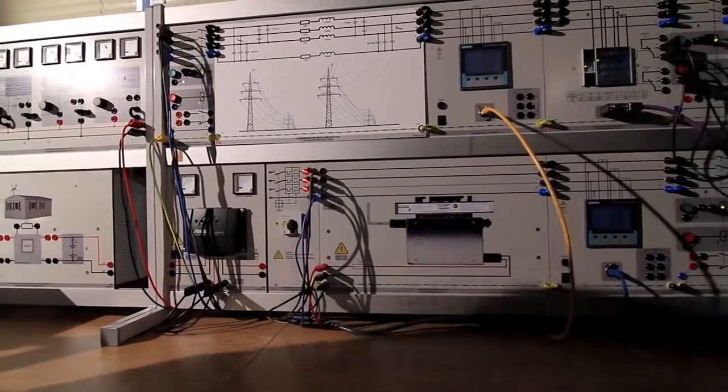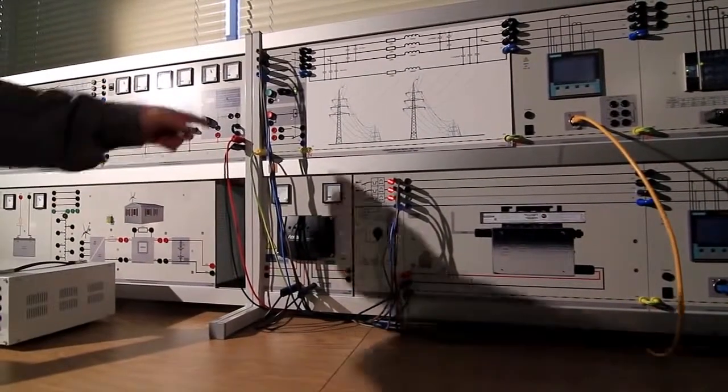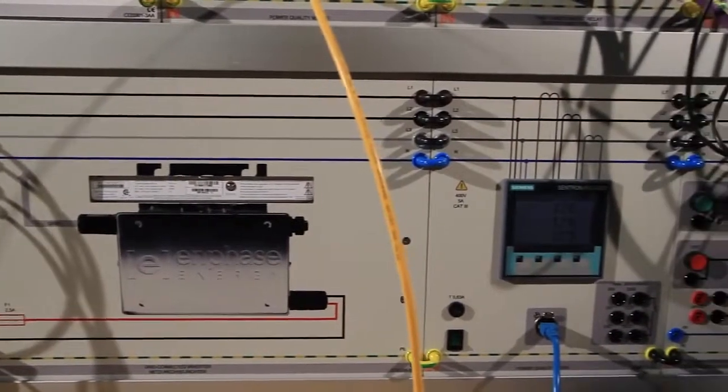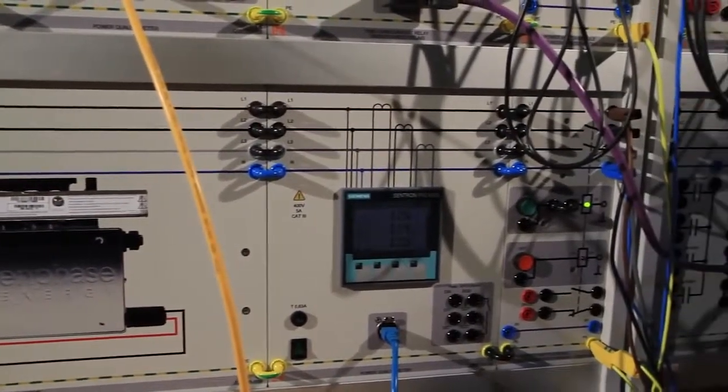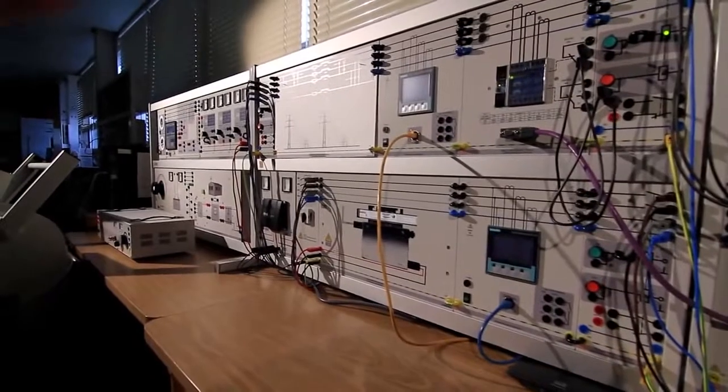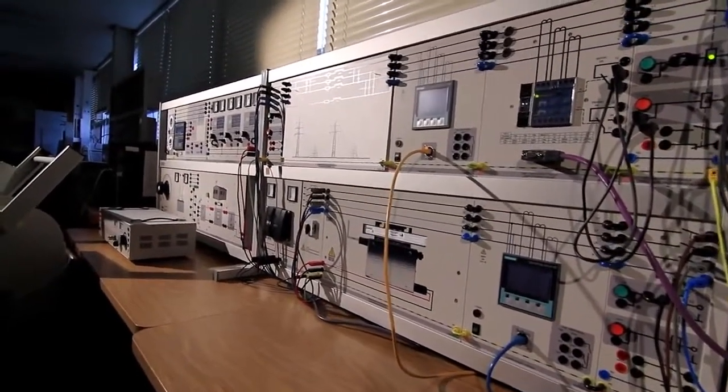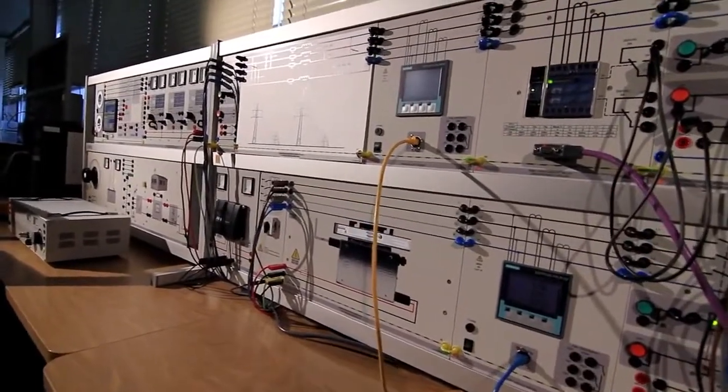Now as you can see we have power from the utility that comes through the circuit breaker to the transmission line. The transmission line represents two possible models: medium length transmission line about 90 miles long. This is what you can see now.